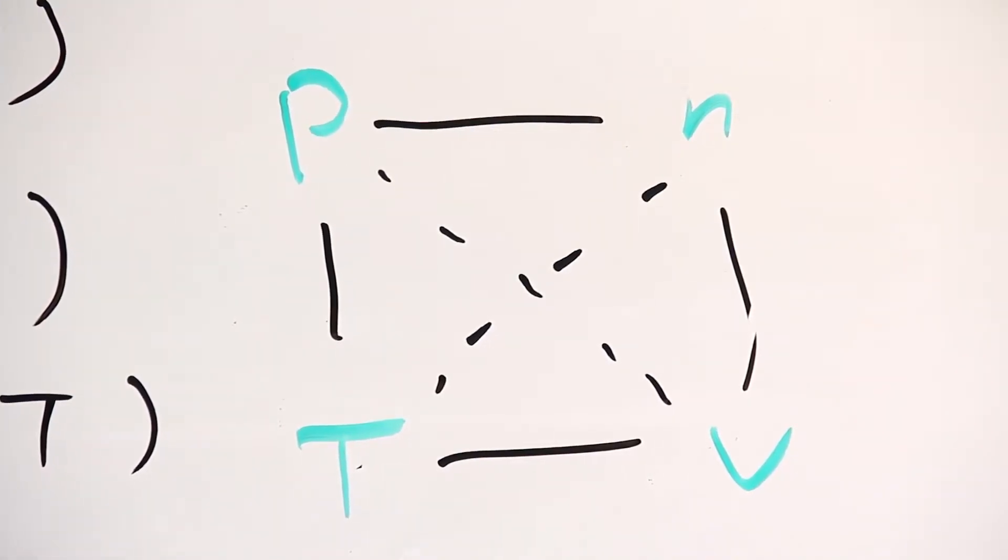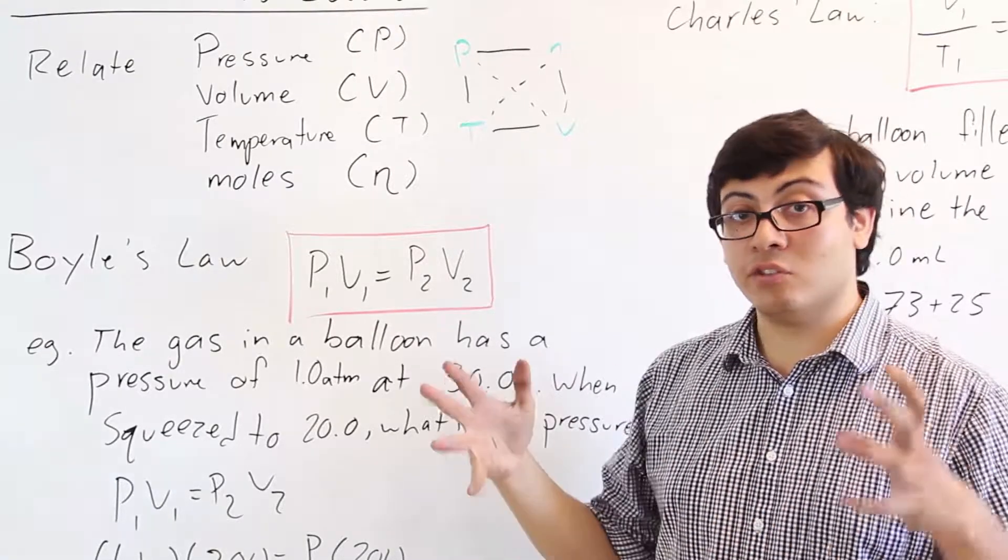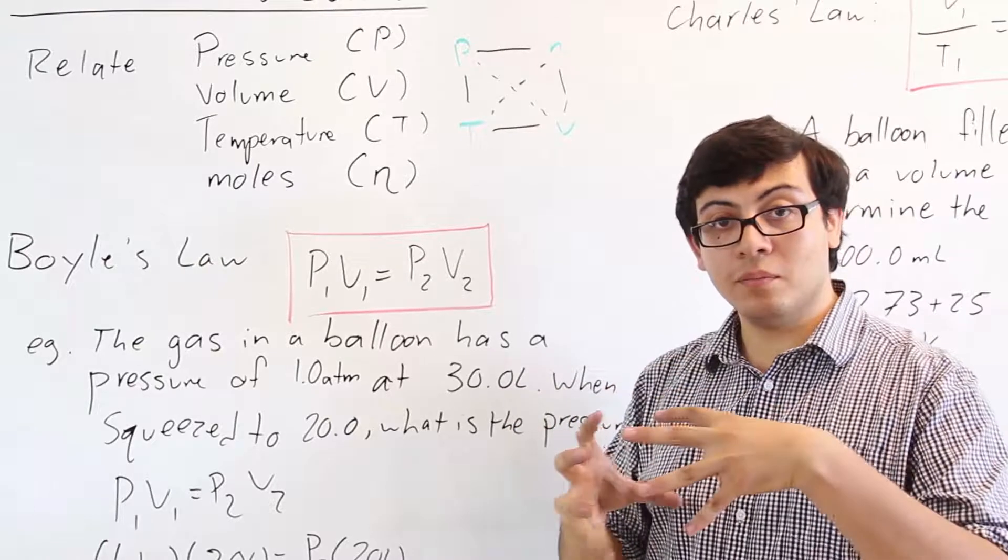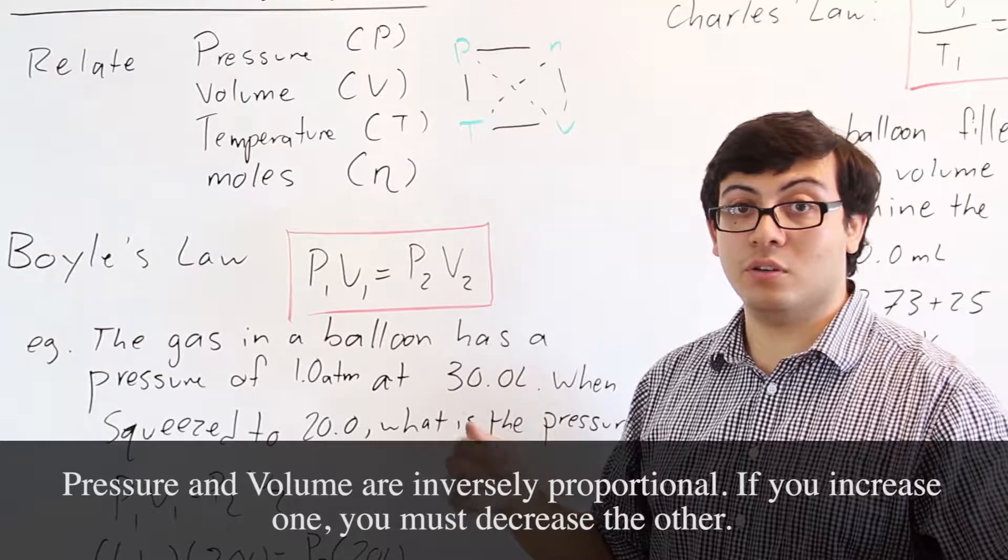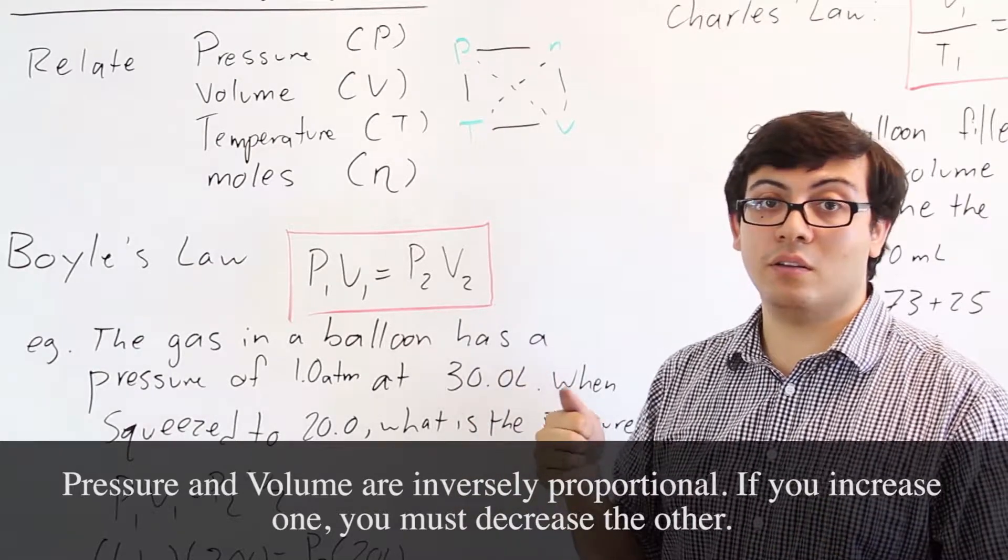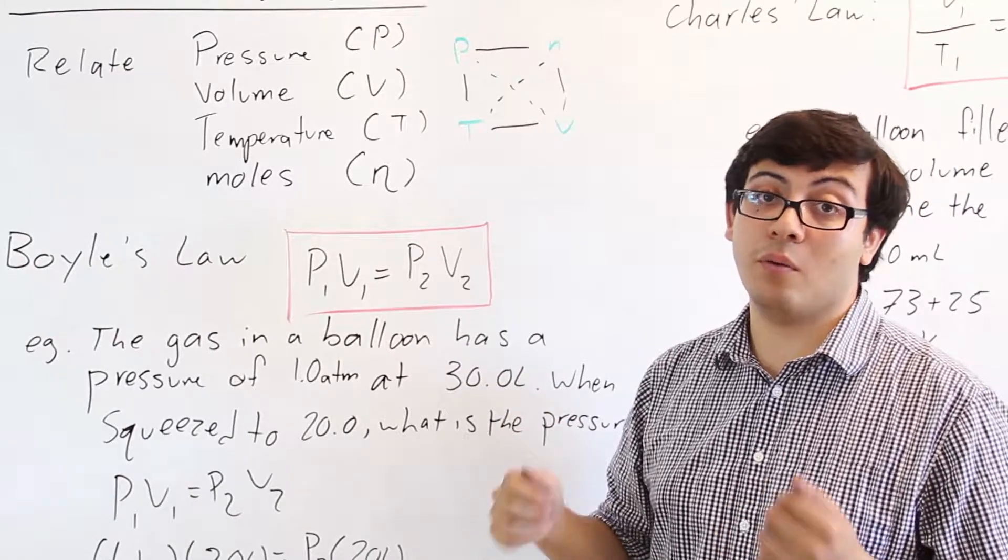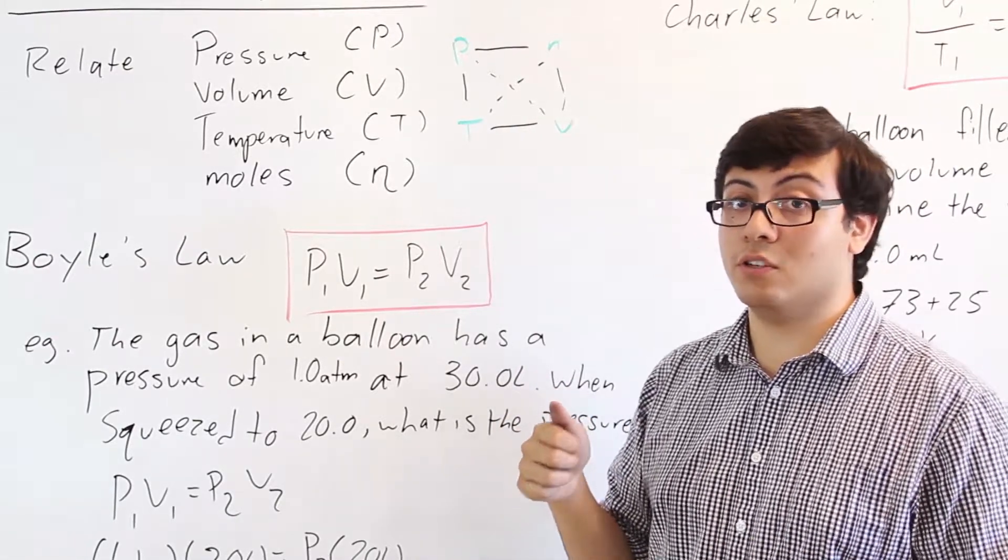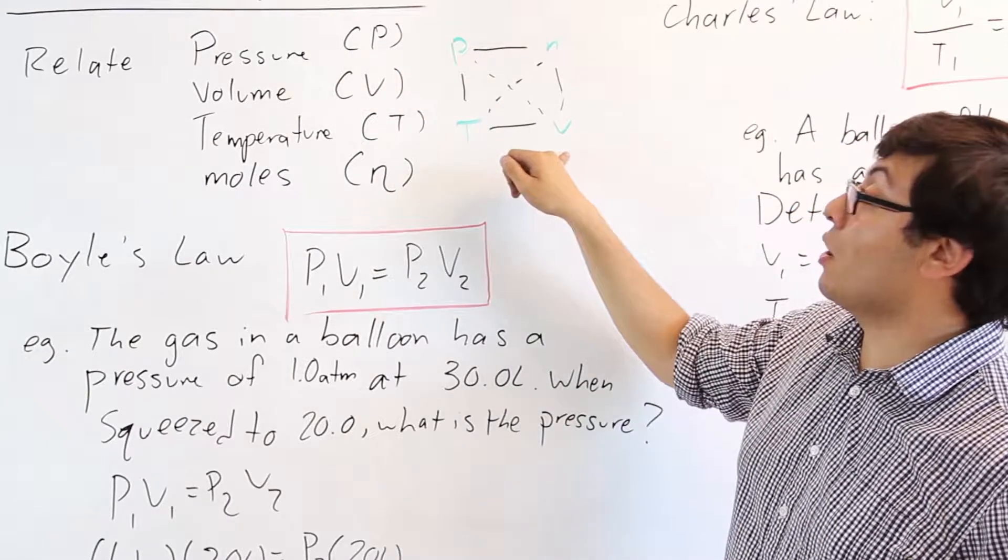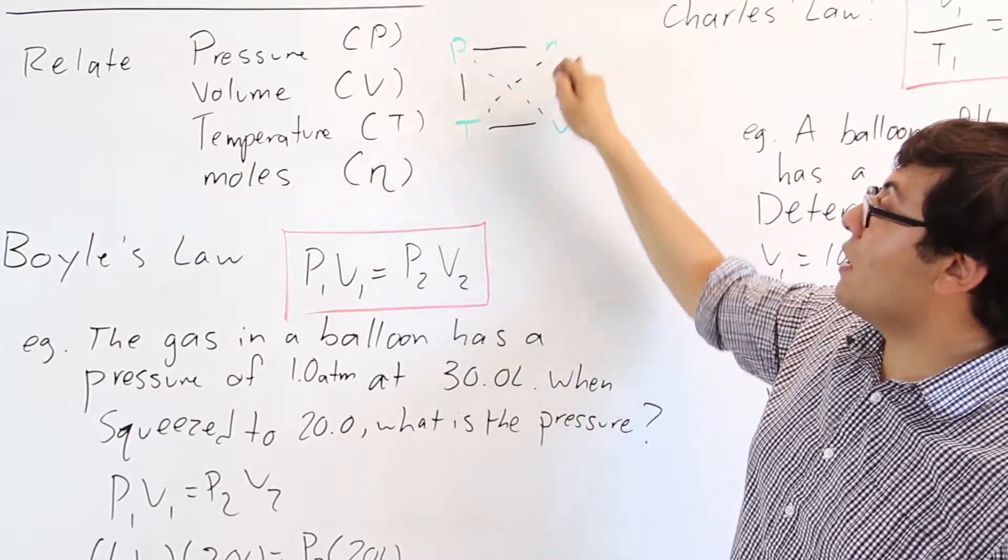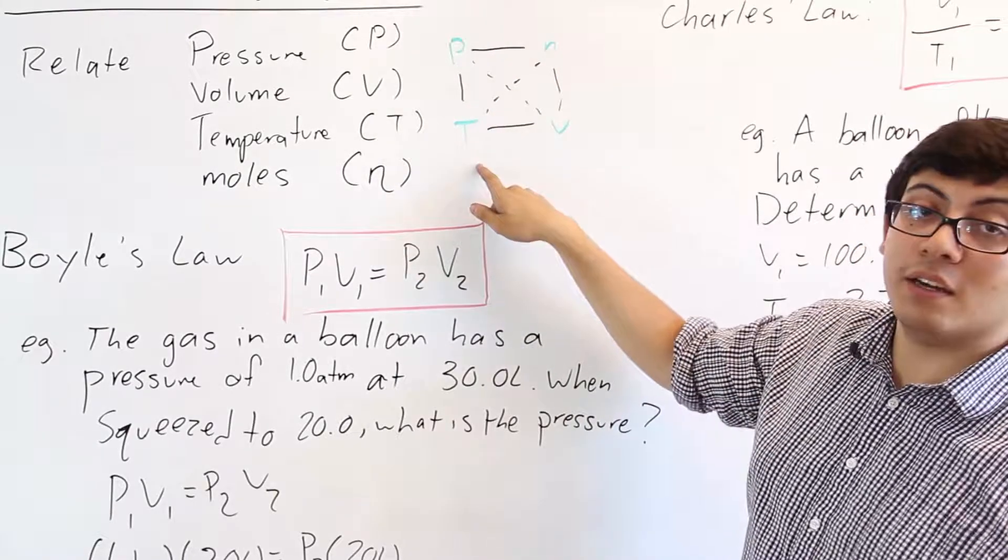The key to filling it out is just remembering the relationship between pressure and volume. So if you have a balloon and you're trying to decrease its volume by squishing on it, you're going to increase the pressure. So pressure and volume are inversely proportional. As you increase one, you have to decrease the other. So if I'm increasing pressure, I have to decrease volume, or if I want to increase volume, I have to decrease pressure. So because they're inversely proportional, I'm going to put them on opposite sides. And then it doesn't really matter where I put moles and temperature, as long as they're on the other sides.